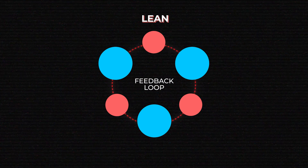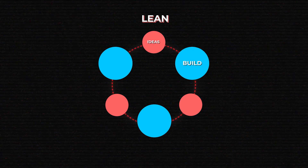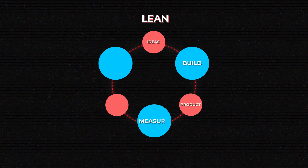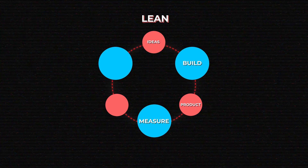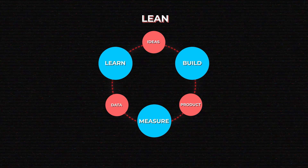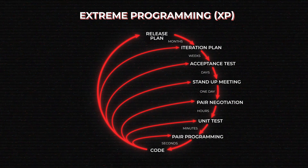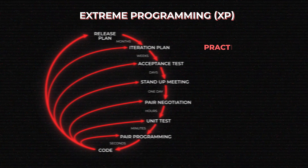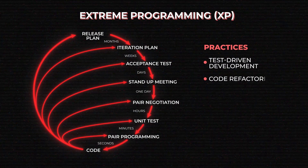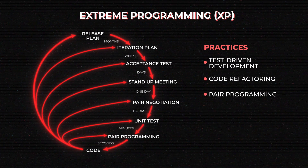Lean consists of three recurrent steps: Build — drafting some version of the product, such as an MVP; Measure — collecting feedback and evaluating if this version of the product succeeds; and Learn — drawing conclusions and deciding how you'll refine your product for the next loop. Another framework called Extreme Programming, or XP, uses the usual lifecycle but emphasizes the technical aspect of development, using practices such as test-driven development, code refactoring, and pair programming.